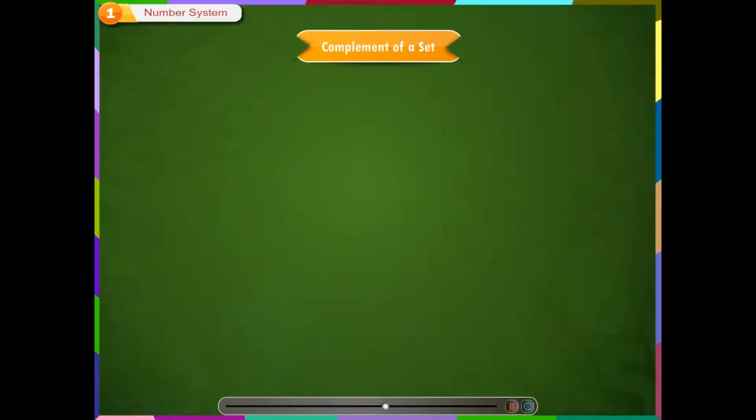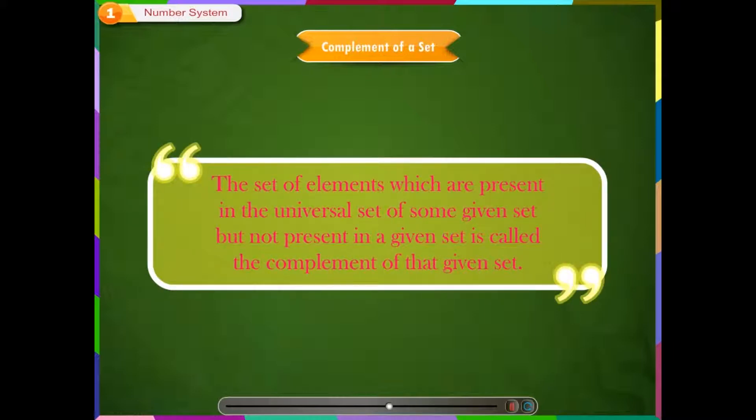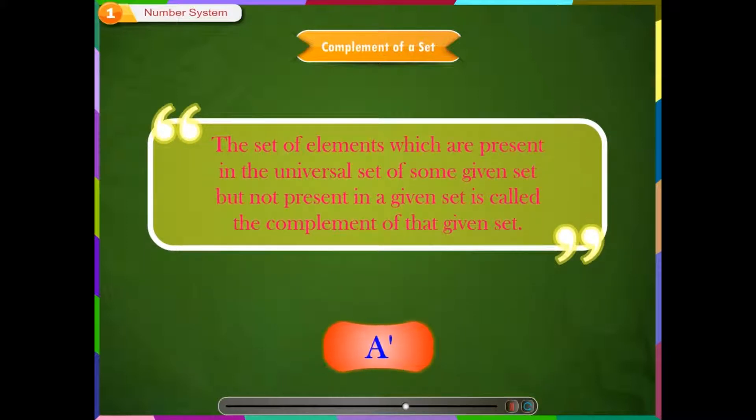Complement of a set. The set of elements which are present in the universal set of some given set but not present in a given set is called the complement of that given set. Symbolically, we denote the complement of set A as A dash.